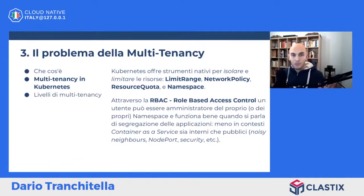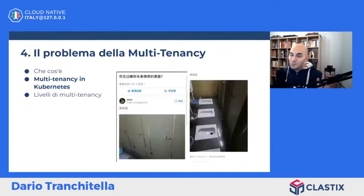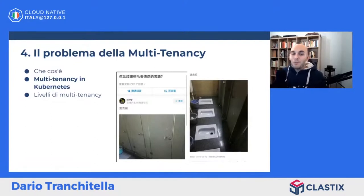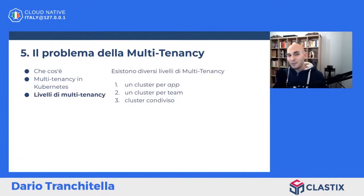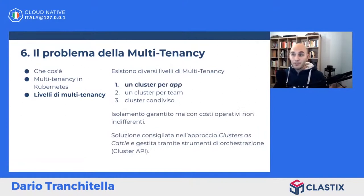Kubernetes ci dà tutti gli strumenti per costruire la nostra multitenancy, però manca sempre un gradino, uno step successivo per avere una multitenancy effettiva. Analizziamo i vari livelli di multitenancy: ne ho identificati tre, i più significativi. Il primo è un cluster per app: l'isolamento è garantito perché avremo per ogni singola applicazione un cluster dedicato.